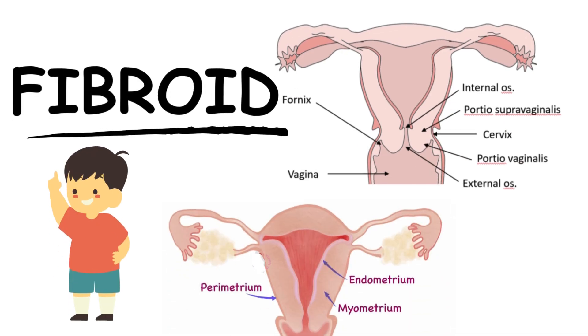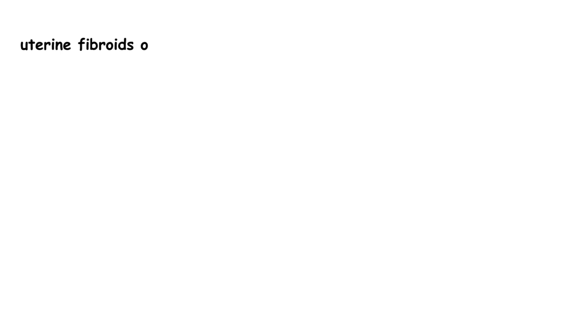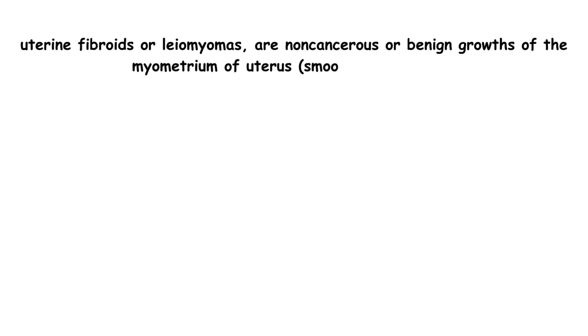Hi everyone, today Health Ninja is going to teach about the gynecology lesson 1, uterine fibroid. Before going to learn about it, let's recall your anatomy knowledge of the uterus. Uterine fibroids, or leiomyomas, are non-cancerous or benign growths of the myometrium of the uterus, which is a smooth muscle layer.